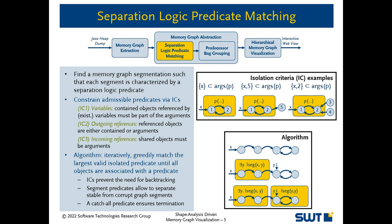The key abstraction of our approach is separation logic predicate matching. Given a set of predicate definitions characterizing complex object payloads and data structure segments, we aim to find a segmentation of the memory graph such that each segment is characterized by a separation logic predicate. To achieve a reasonable segmentation, we require that predicates must adhere to three isolation criteria as illustrated in the top right. Our algorithm iteratively and greedily matches the largest valid isolated predicate until all objects are associated with the corresponding predicate. Note that the isolation criteria prevent the need for backtracking, and a catch-all predicate ensures termination. Most importantly, the use of data structure segment predicates allows us to separate the stable from the corrupt segments in a memory graph.